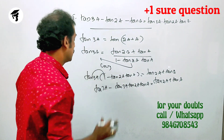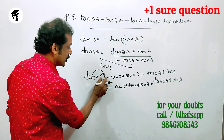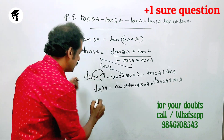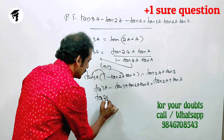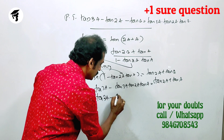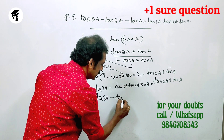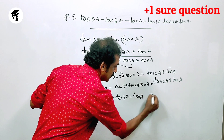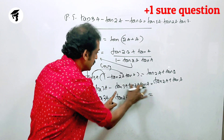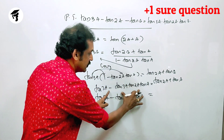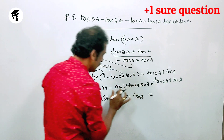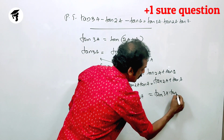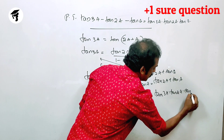Next, you arrange the answer. tan(3a) is equal to — that is minus of tan(3a) into tan(2a) into tan(a).